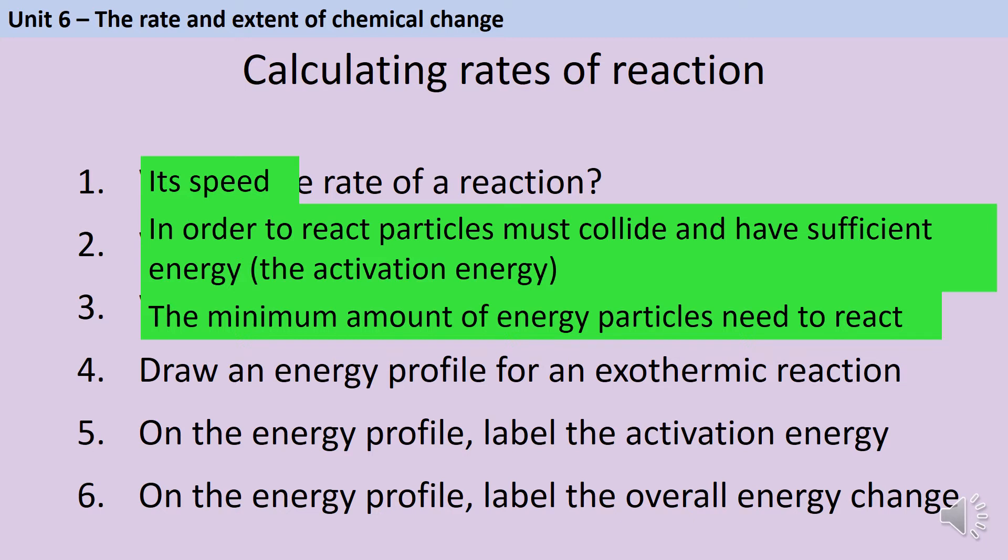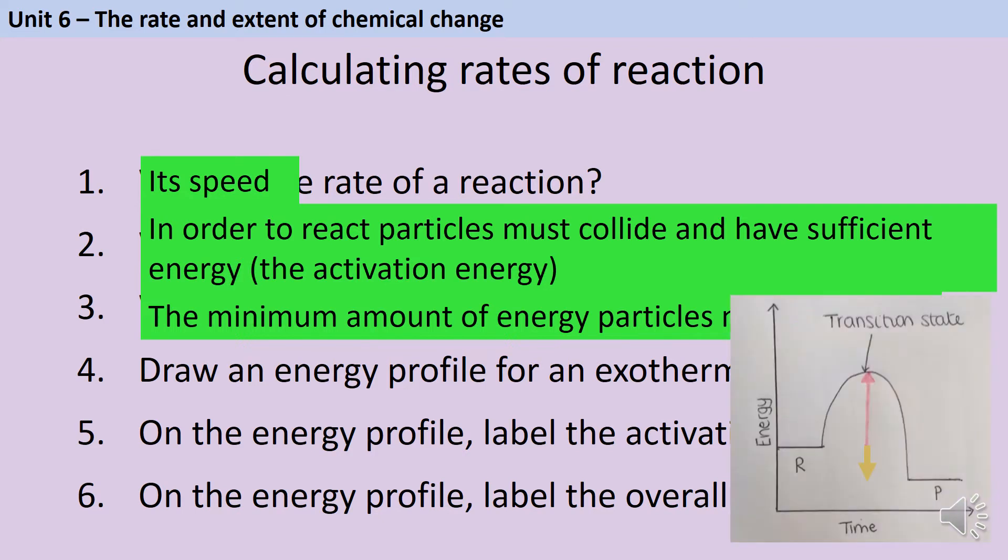An energy profile is a diagram we draw to show a chemical reaction proceeding. For an exothermic reaction it looks like this: a line representing reactants, a line representing products, and between them there's this hump. Whether a reaction is exothermic or endothermic, you're going to have this hump because every chemical reaction needs to take in a bit of energy before it starts. That's the activation energy, used to break bonds. The activation energy is represented by the pink arrow and the overall energy change by the blue arrow.